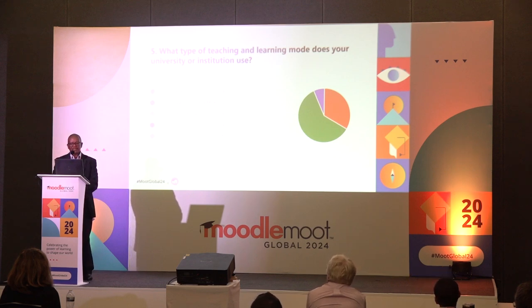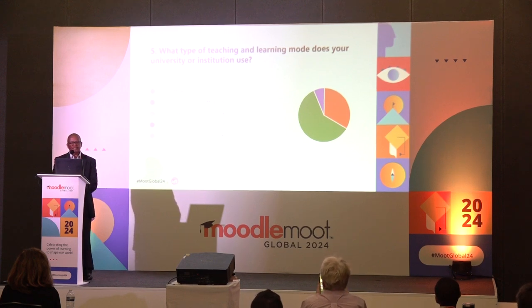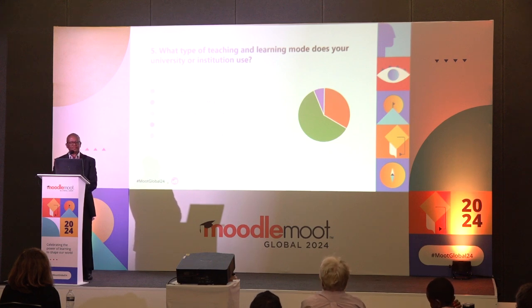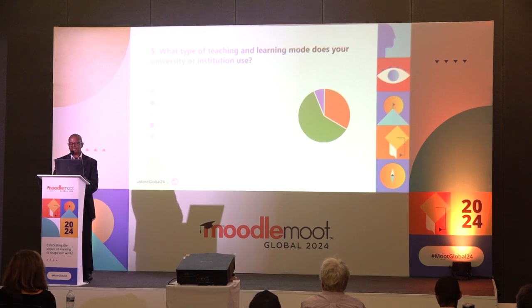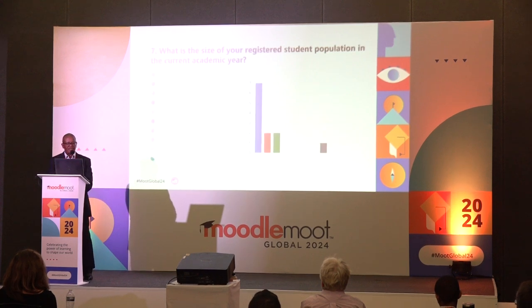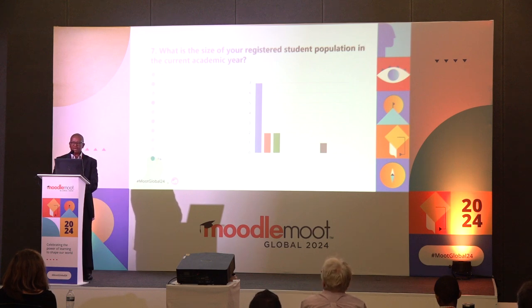What type of teaching and learning modes do these institutions use? These are mainly hybrid — a combination of distance or e-learning as well as contact — followed by distance e-learning, which the University of South Africa uses as an open distance e-learning institution. The size of the institutions was largely small to medium, with the outlier being UNISA at between 350,000 and 400,000 students, which we intend to grow over time — with a stable Moodle being a key enabler.